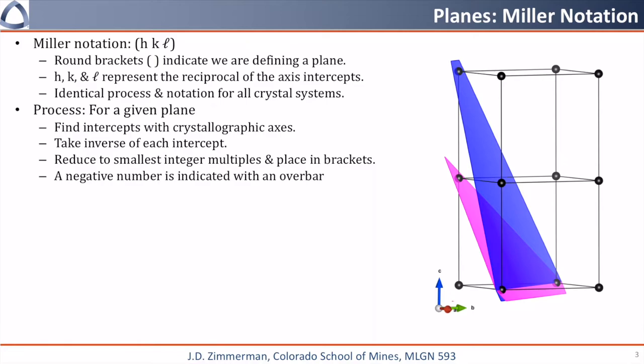Let's practice this for the two planes I have shown at the right. We're going to assume that the origin is this bottom-left atom here, and for the pink plane, the intercepts of the three crystallographic axes are at 1, 1, and 1. We'll take the inverse of these, again returning 1, 1, and 1, and we'll then take the smallest integer multiples of those and put it in round brackets, giving us the (1,1,1) plane.